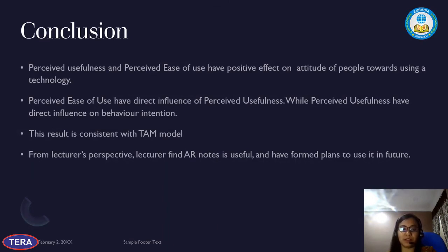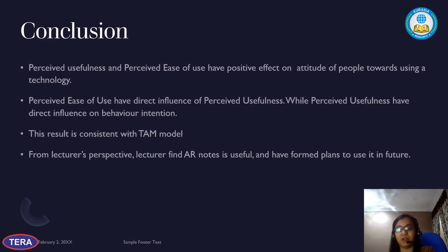As a conclusion, perceived usefulness and perceived ease of use have a positive effect on people's attitude towards using a technology. When someone wants to accept a technology, they must first feel that it is useful, and second that it is user-friendly. These two factors affect technology adoption. Consistent with the TAM model, perceived ease of use directly influences perceived usefulness, and perceived usefulness directly influences behavioral intention. Overall, from the lecturers' perspective, they find AR notes useful and have formed plans to use them in the future.